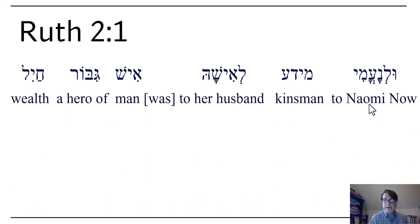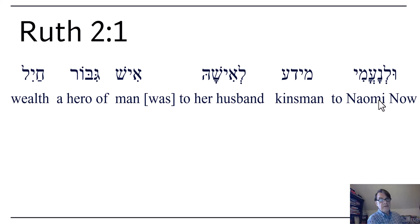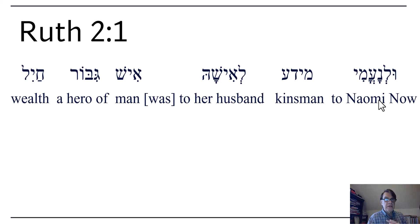So it's something like 'now to Naomi.' I went with 'now' because this is really a new part — this is part two. Act one, chapter one is act one; chapter two is act two. So whoever did the chapter divisions did okay on this one. So now to Naomi...